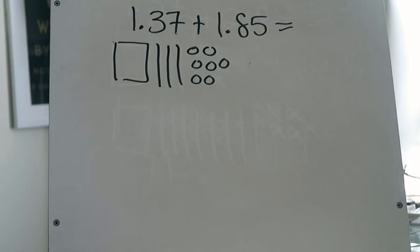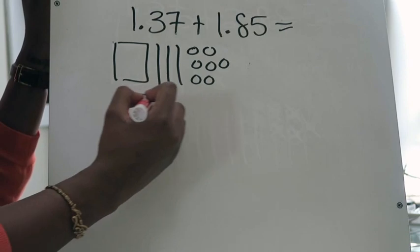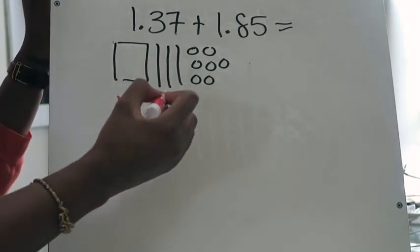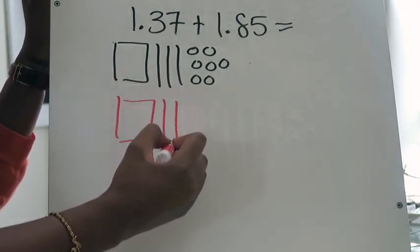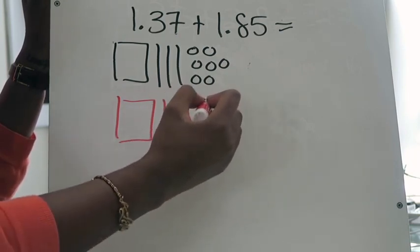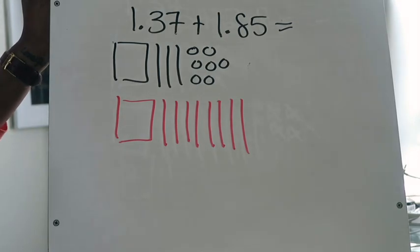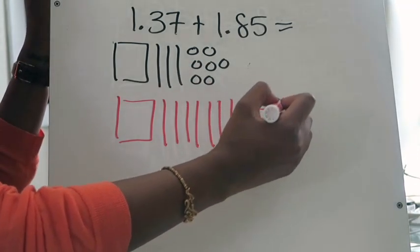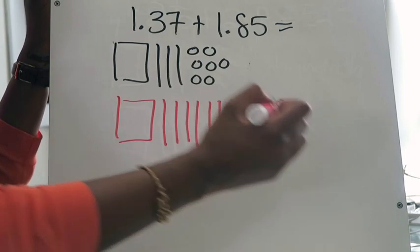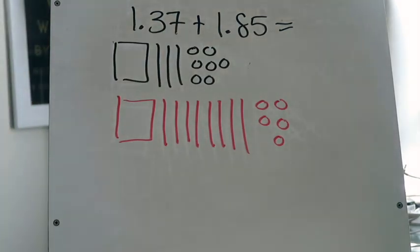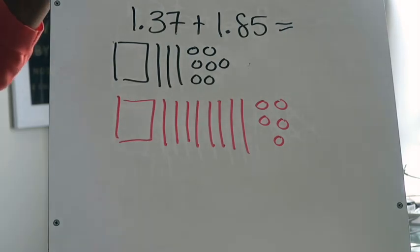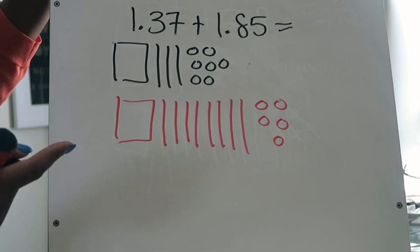Next I'm going to model one and 85 hundredths. I have one whole, so I will draw one whole. I have eight tenths, so I will model one, two, three, four, five, six, seven, eight tenths. And five hundredths, so I will model one, two, three, four, five. That's step one. Step two — remember — is to ask yourself: do I have more than nine of any piece? If the answer is yes, there's some regrouping that needs to be done.